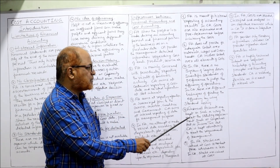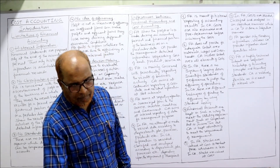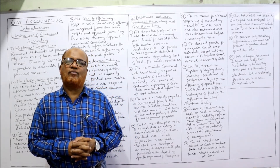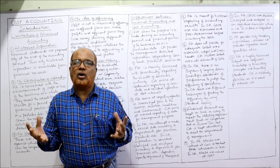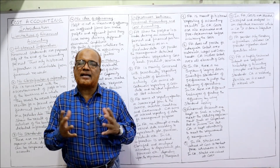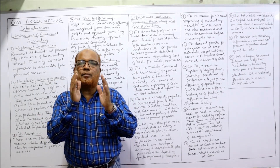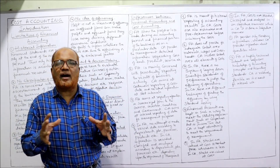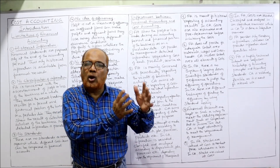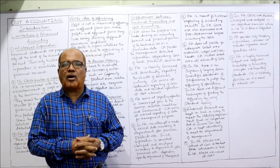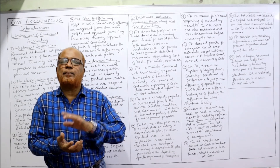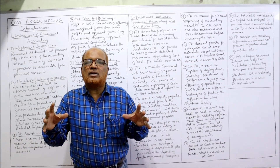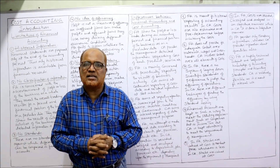Financial accounts are kept to meet statutory requirements — following the provisions of law. Every country has different laws such as company law, income tax act, etc., which specify how to maintain accounts and what provisions regarding maintenance apply. But in cost accounting, accounting is meant for management purposes, so more subjectivity exists — different cost accountants will use different recording methods and different reports.